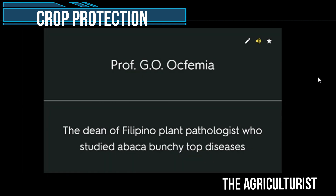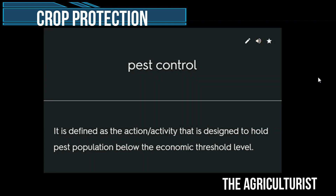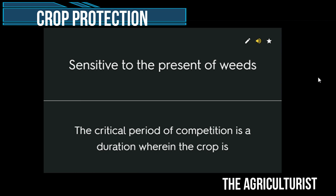Professor Geronimo Basa — the dean of Filipino plant pathologists who studied abaca bud and heart rot diseases. Pest control — defined as the action or activity designed to hold pest populations below the economic threshold level. The critical period of competition is a duration wherein the crop is sensitive to the presence of weeds.